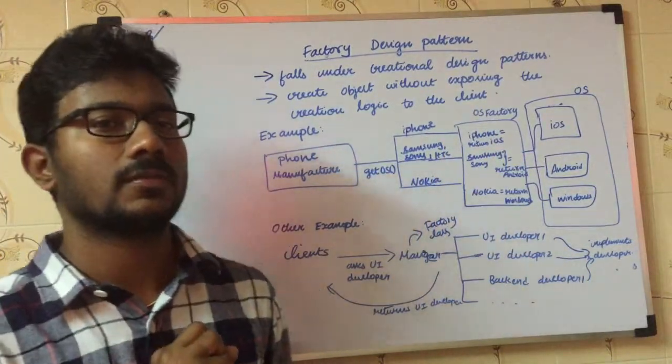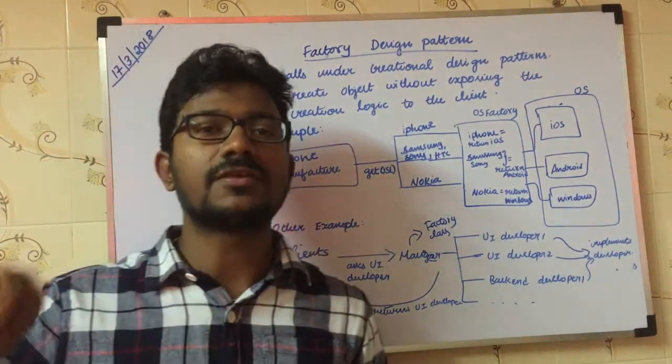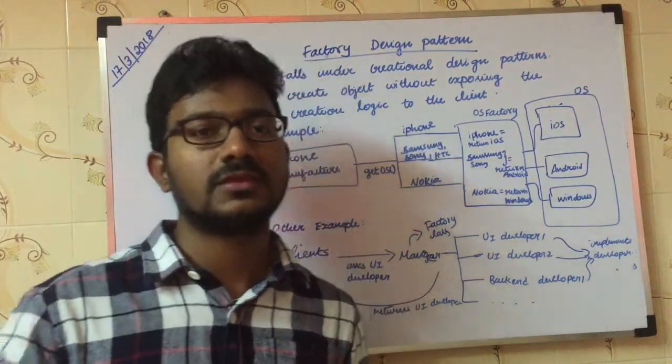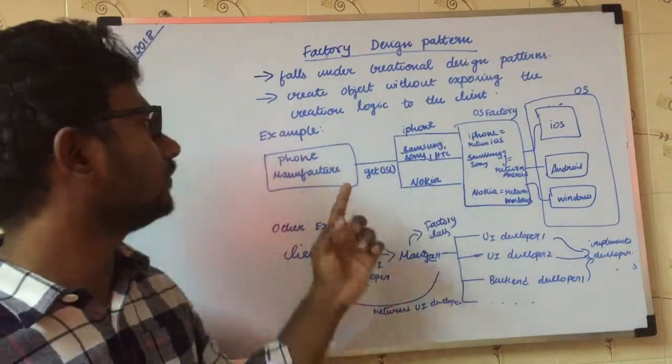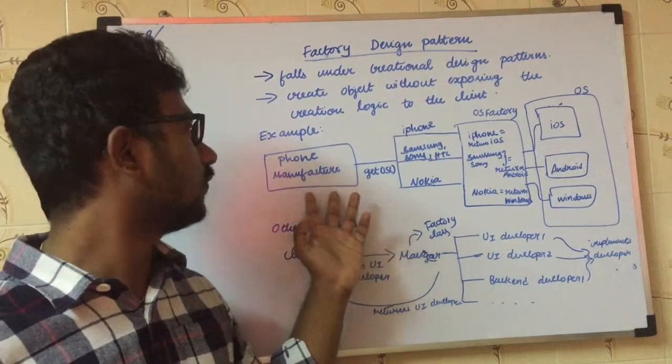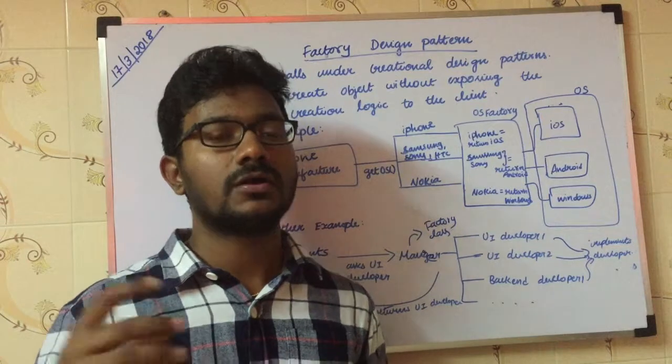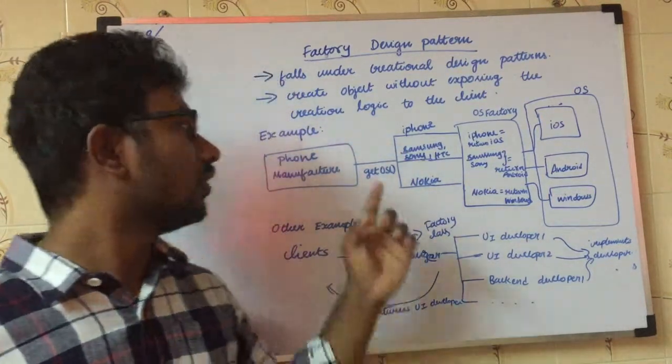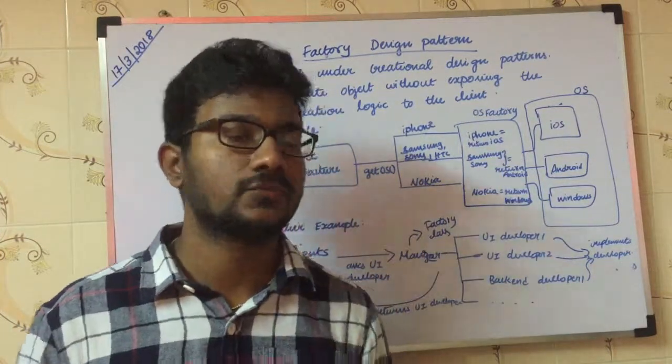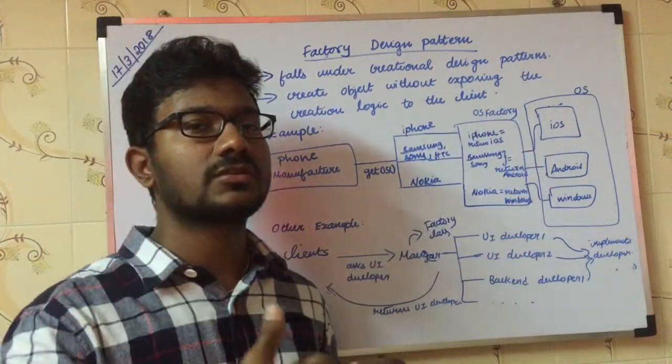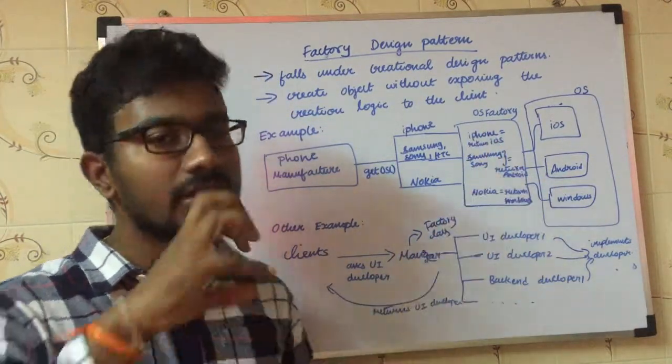According to this example, the phone manufacturer doesn't have any knowledge about the OS. The object creation information is hidden from the phone manufacturer. He just needs an OS for that phone, so that request will be handled by the OS factory. Here the object creation is done using the input - iPhone, Samsung, Sony - based on the input, the best object will be returned.